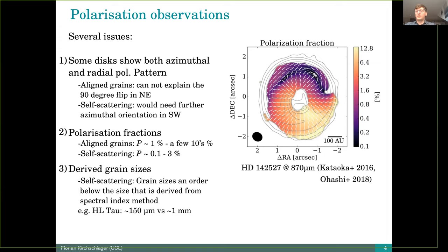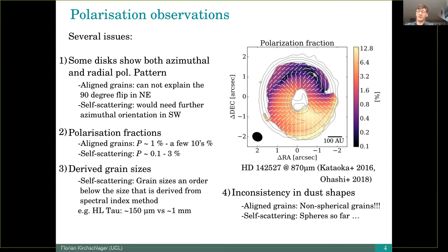Another problem is that the dust grain sizes which are derived from the self-scattering are an order of magnitude below that which is derived from the spectral index method. For HL Tau, we have here 150 micrometer from the self-scattering scenario against one millimeter from the spectral index method. And the last problem is that we have an inconsistency in dust shapes. The aligned grains need non-spherical grains, otherwise we can't align anything, and the self-scattering is only for spherical dust grains so far.